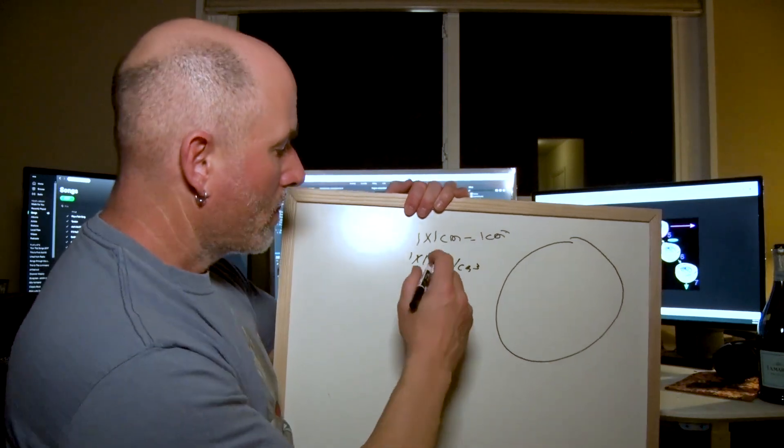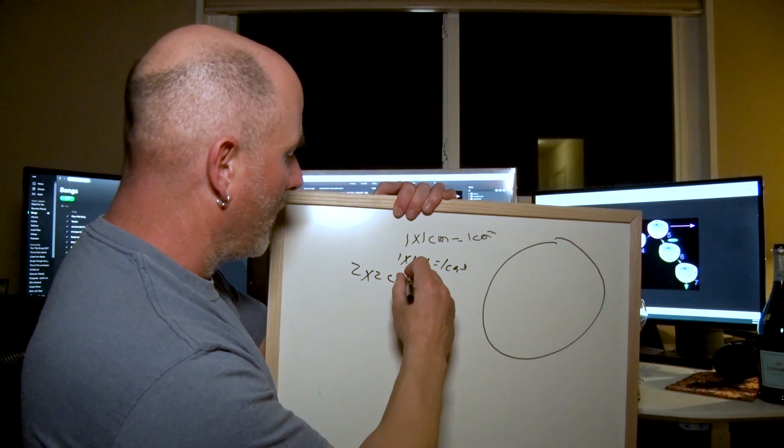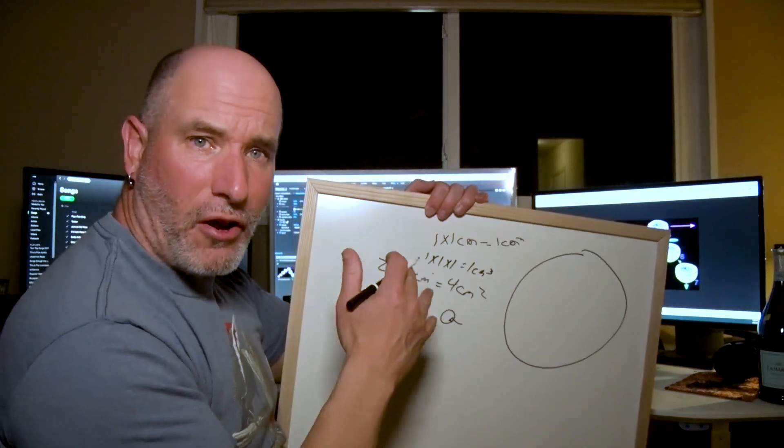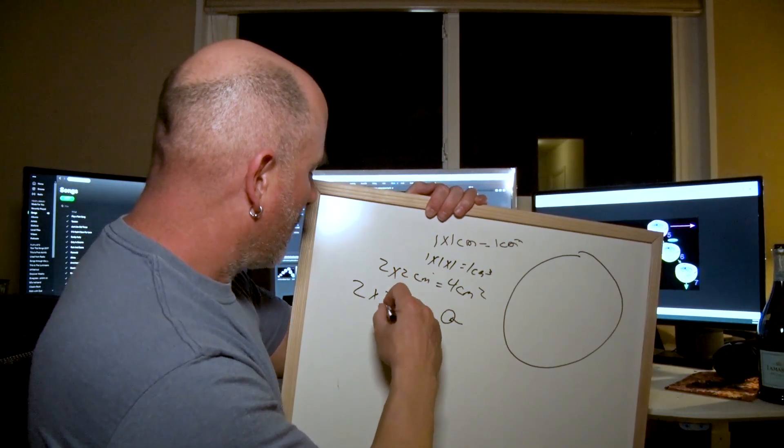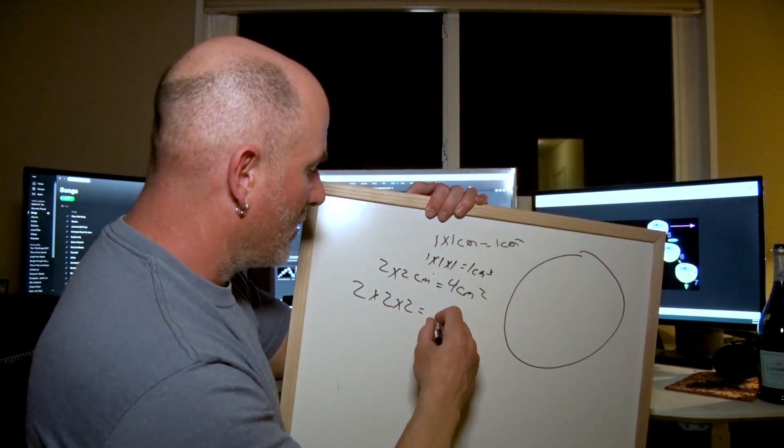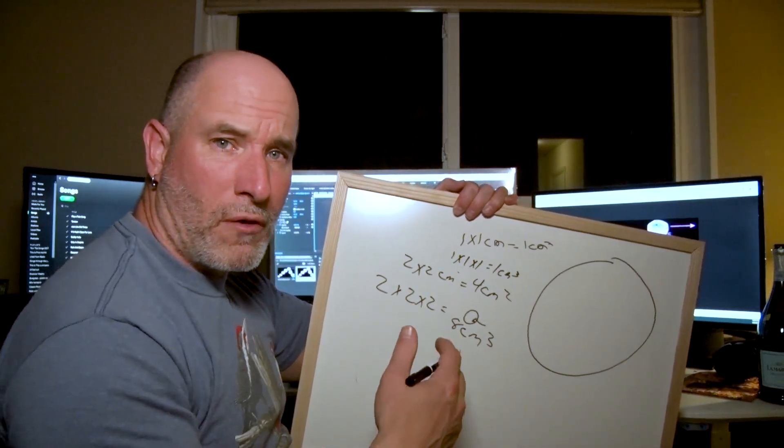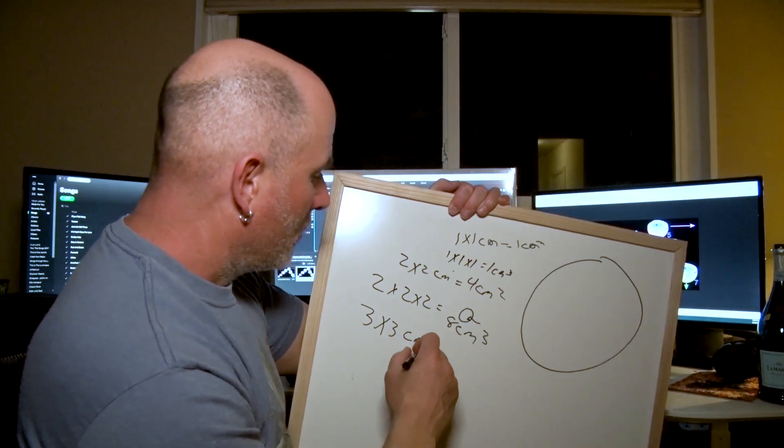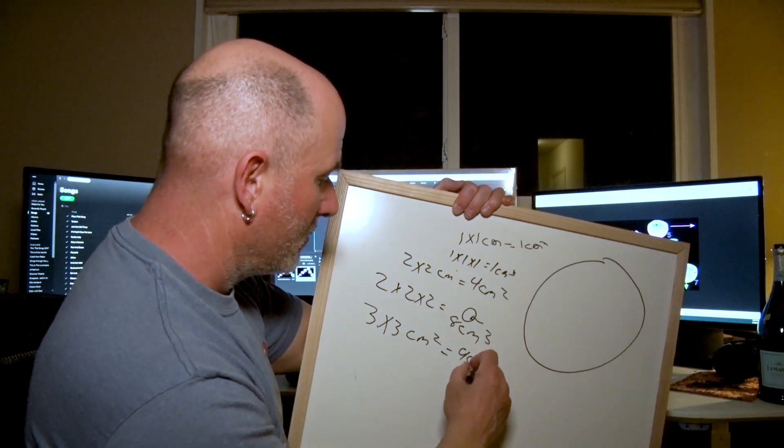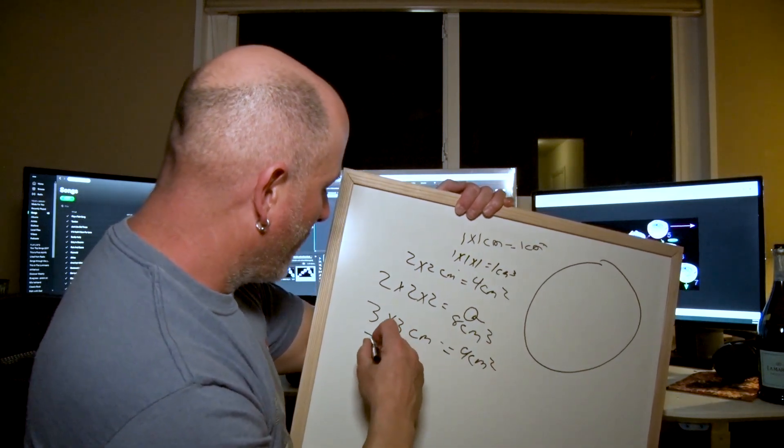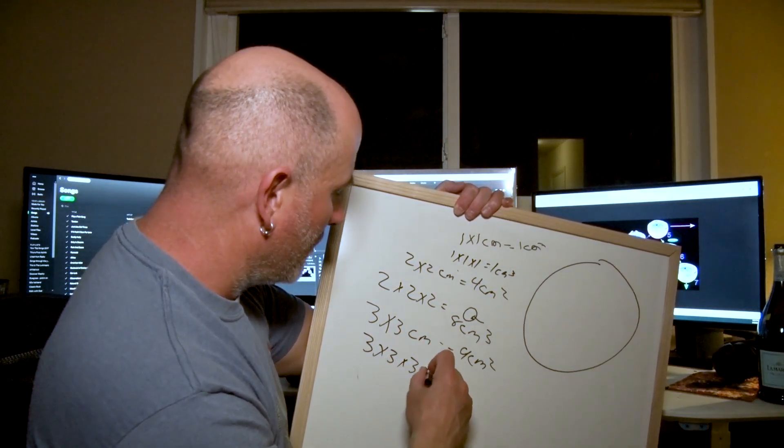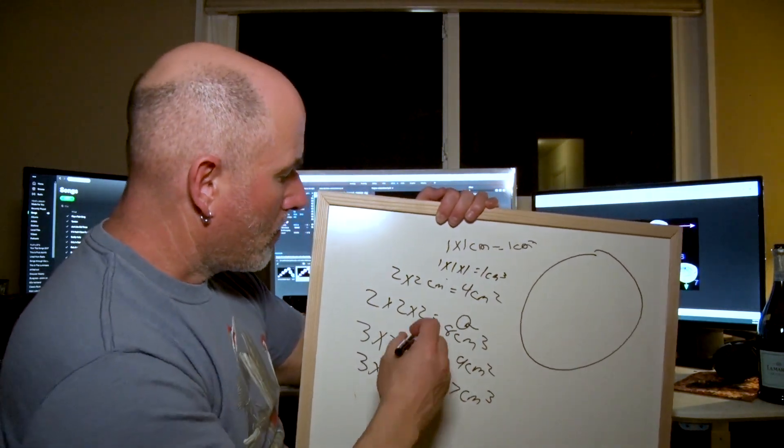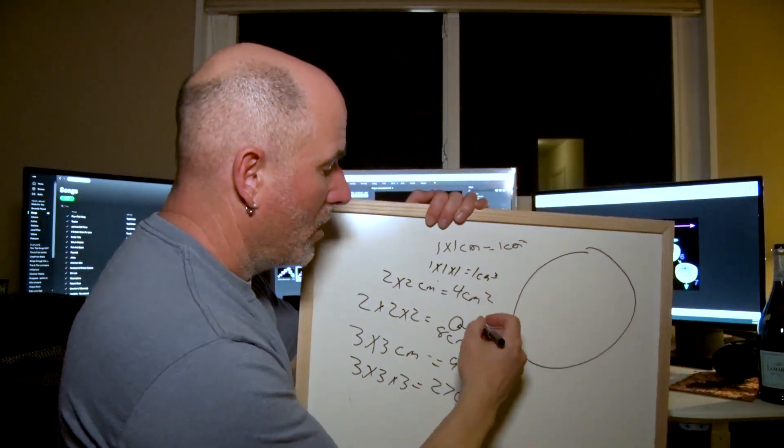Okay now let's say I go 2 by 2 for my surface, length times width, I now have 4 centimeters squared. But if I do the volume, volume goes by length times width times height, hence three dimension, that's going to equal 8 cubic centimeters. Let's go up one more. Now I go 3 by 3 length times width, well I've got, which equals 9 square centimeters. But if I go 3 by 3 by 3 that equals 27 cubic centimeters for my volume.